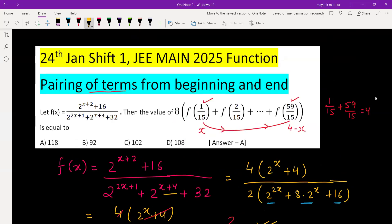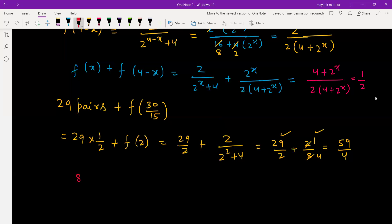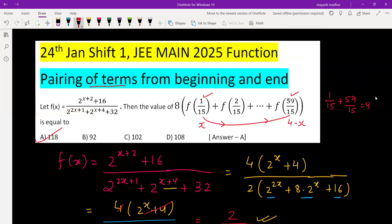And we should not forget that we have to multiply by 8 also. So let's multiply by 8. We get 8 times 59 by 4, which is 118. What is the answer given? Option A, 118 is the answer.